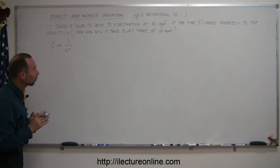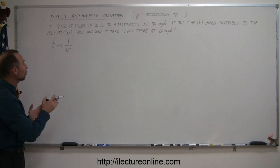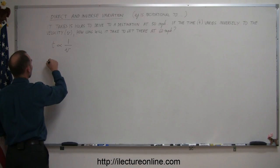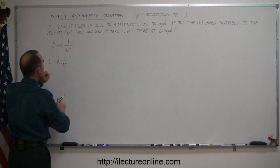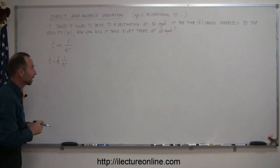And then to turn that into an equation, you need to include a constant of proportionality, so we can write that t equals k times 1 over v. Then given the initial information, we should be able to figure out what the value for k is.